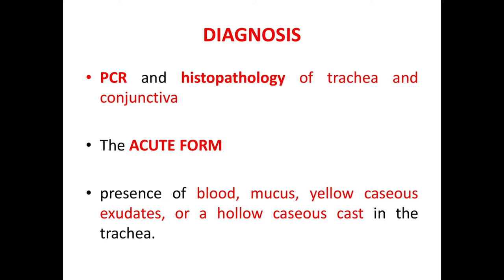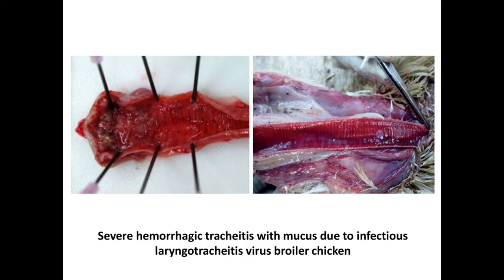Coming to diagnosis, PCR and histopathology of trachea and conjunctiva are the diagnostic techniques used for ILT. Characteristic clinical signs in the acute form include the presence of blood, mucus, fibrinous exudate, or a fibrinous cast in the trachea. Here you can see severe hemorrhagic trachea with mucus due to ILT in a broiler chicken.